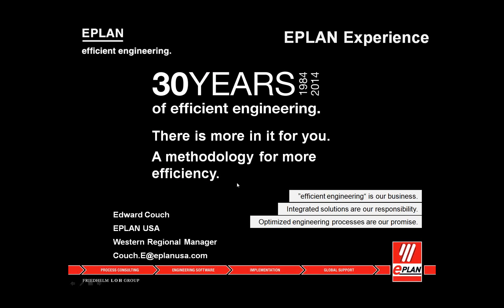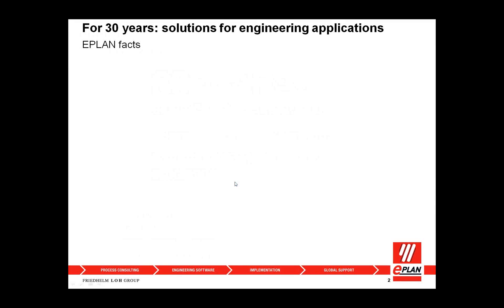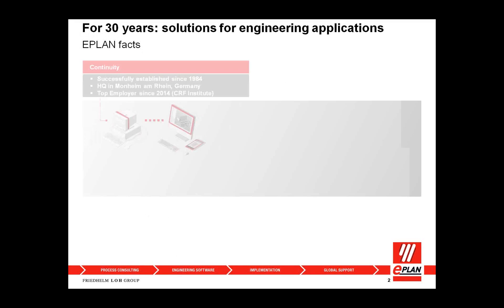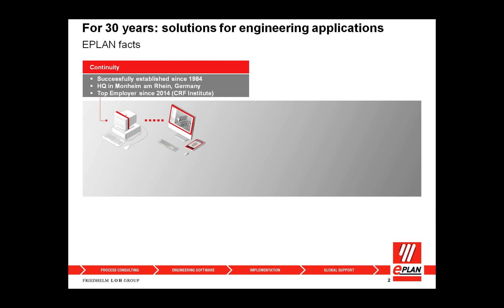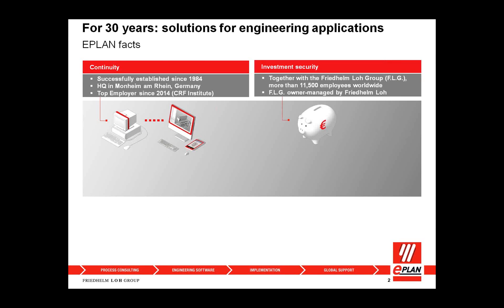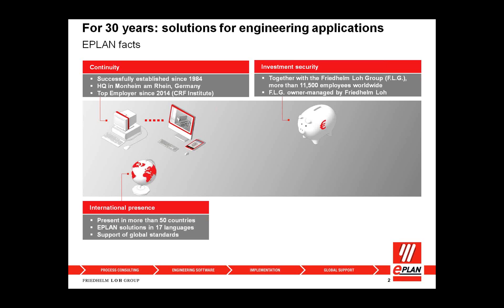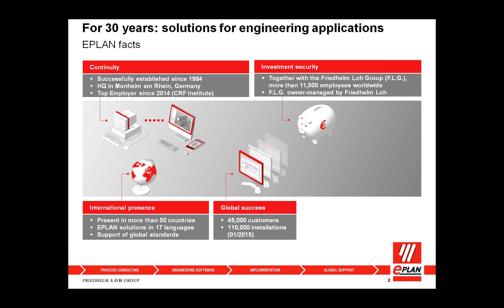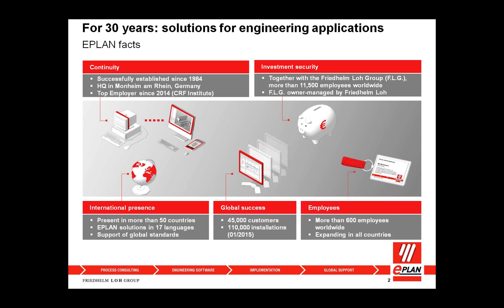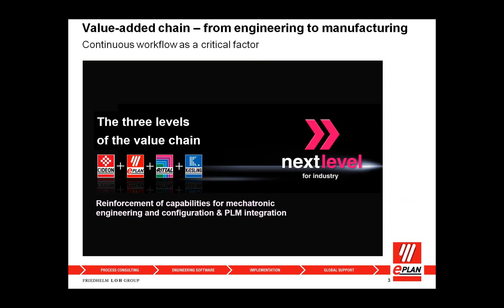This is Edward Couch. I'm the Western Regional Manager for ePlan USA. ePlan is a tool for developing electromechanical systems. ePlan has been in development since 1984, headquartered in Monheim, Germany. The Friedhelm Loh Group is the parent company with about 11,500 employees. We have an international presence in 50 countries, tools developed in 17 different languages, over 45,000 customers, 110,000 installations, and more than 600 employees and expanding.